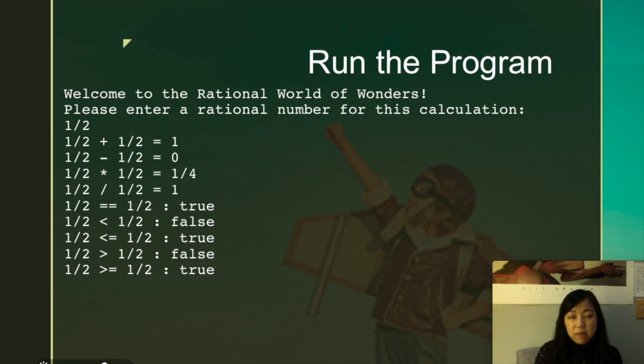When you run the program, I expect that this is the output something like that. If you input one over two, it will actually do all the calculations and so on. And also, so this one basically has also implicitly have the input working and the output working.